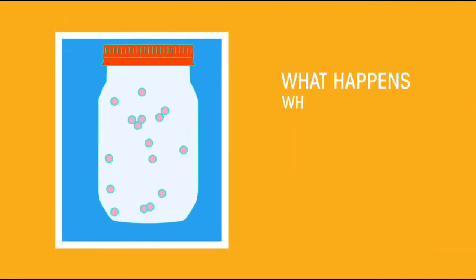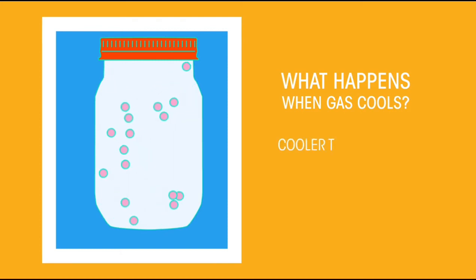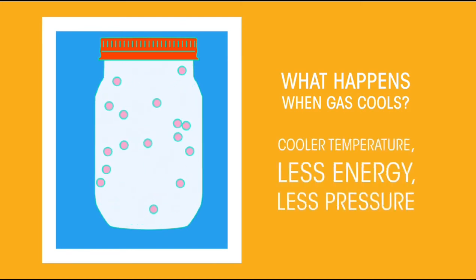So what happens if we then cool down the gas? This time, the particles have less energy, and so less pressure is being exerted on the container, which is why balloons shrink and become sad and saggy.